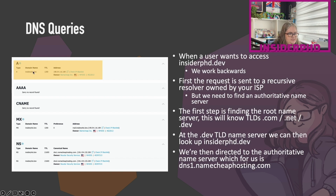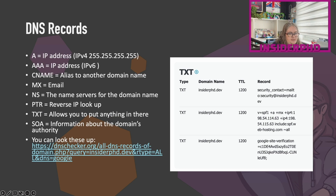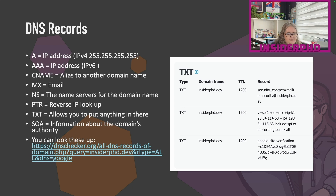If you look up the actual DNS queries, insiderphd.dev has a type A record pointing to an IP address like 198.154.x.x, owned and hosted by Namecheap. There are several types of DNS records: A records (IPv4 address), AAAA records (IPv6 address), CNAME (an alias to another domain name), MX (email), NS (name servers), reverse IP lookups, and TXT records which allow you to put anything in — including security contact records. I'll leave a link in the description to a website where you can look up DNS records for any domain.